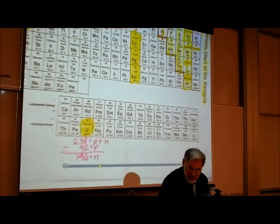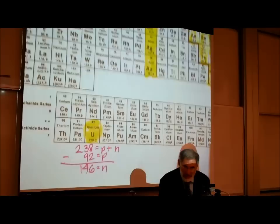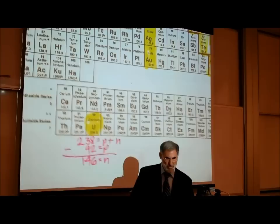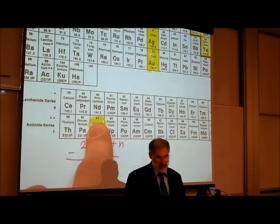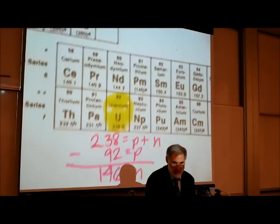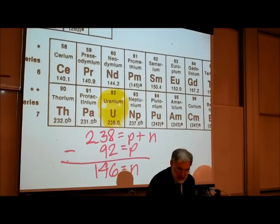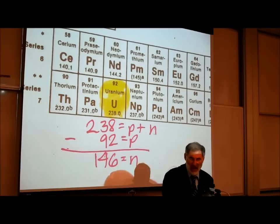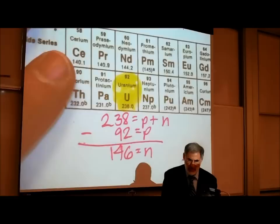The heaviest naturally occurring element is uranium. Uranium is the largest, heaviest element found naturally in the universe as far as we know. It has an atomic number of 92, meaning it has 92 protons in the nucleus, and an average weight of 238. Subtracting, each uranium atom on average has 146 neutrons. Since the number of neutrons is much larger than the number of protons, uranium is radioactive — it's called uranium-238.